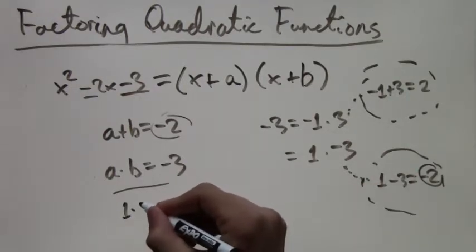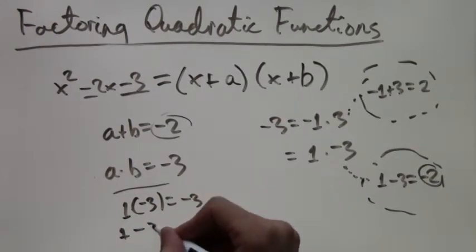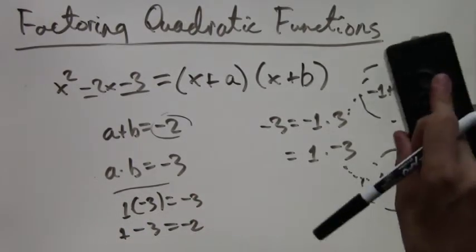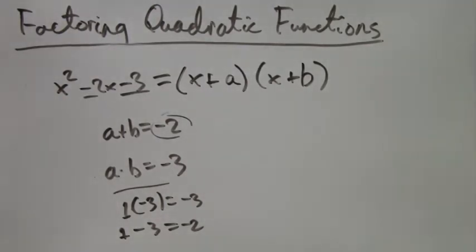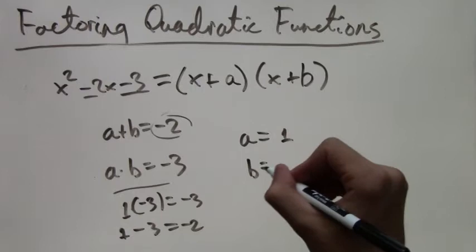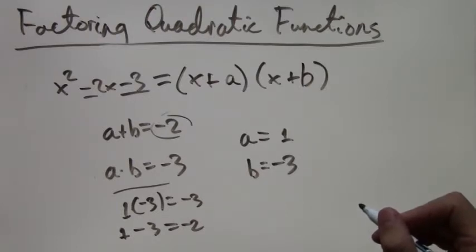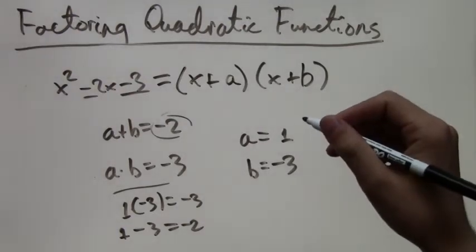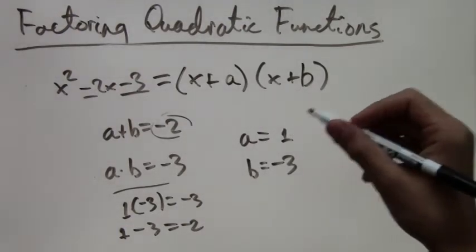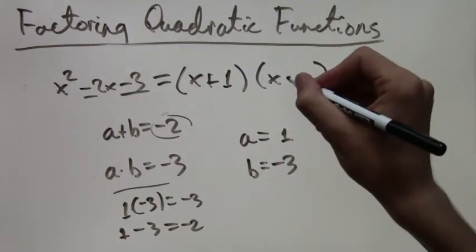So now we know what a and b are. They're going to be 1 and negative 3. a equals 1, b equals negative 3. And now we can just replace them in the formula, and we'll have the factored equation, the factored function: x plus 1 times x minus 3.